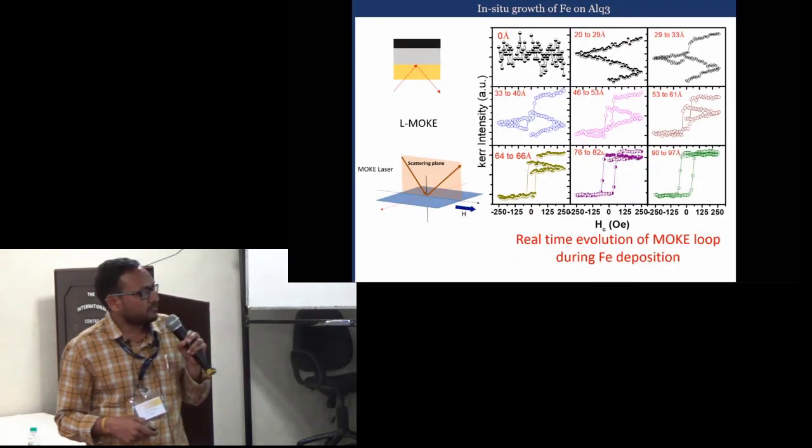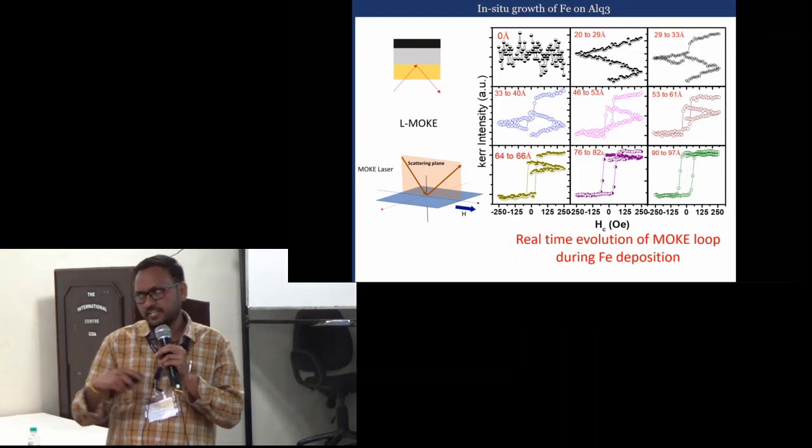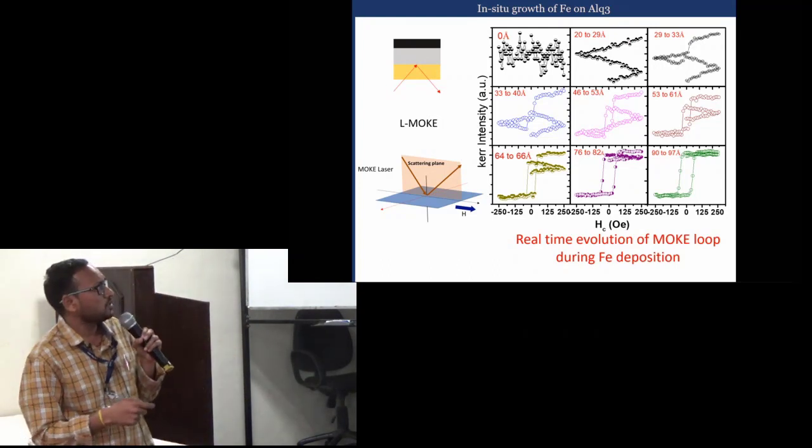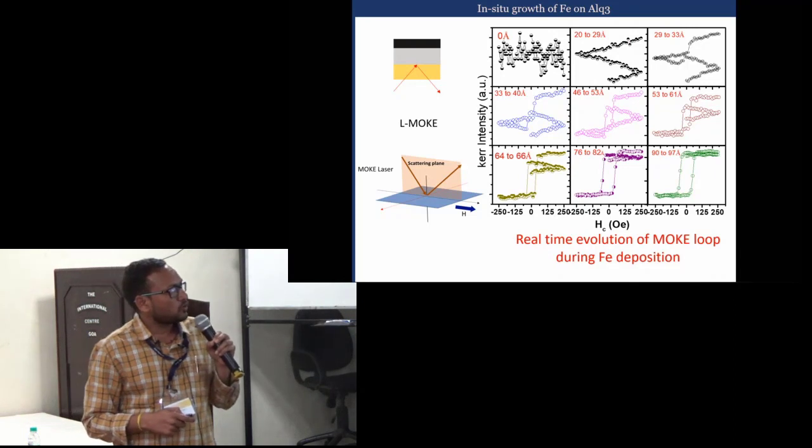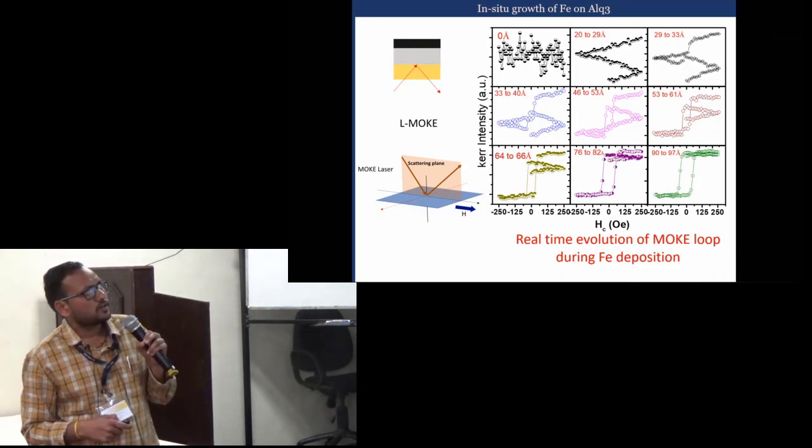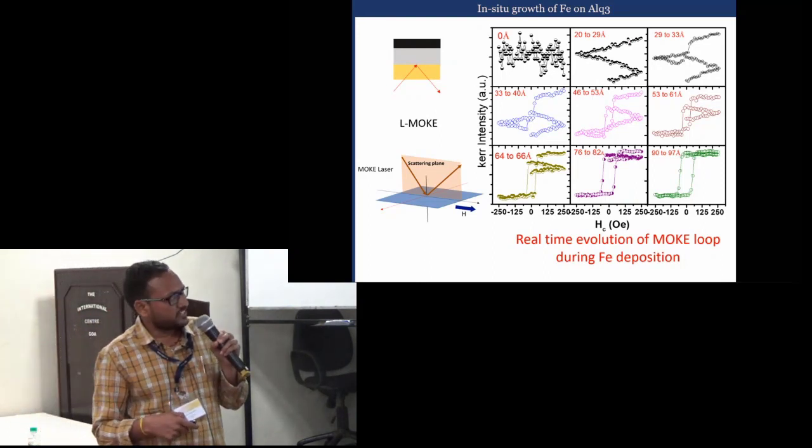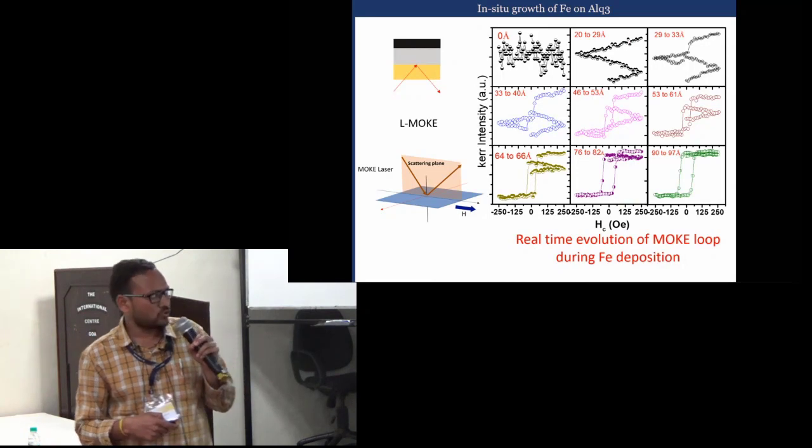These are the real-time evolution of MOKE loops during the Fe deposition on Alq3, my organic semiconductor molecule. Here you see that up to 29 angstrom we do not get any Kerr signal. That Kerr signal evolved from about 30 angstrom and gets stable up to 100 angstrom.